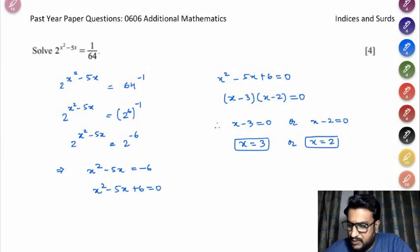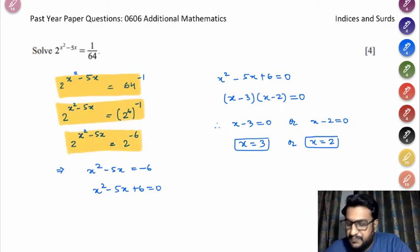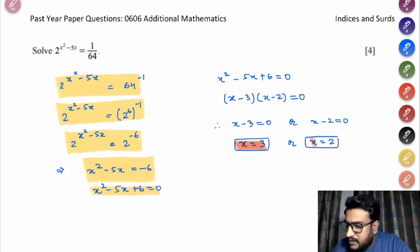The first question is solve 2 to the power x² minus 5x equals to 1 by 64. So first try to write down everything in the form of exponents. Once you write down everything in the form of exponents, the next step is to make the base same. Once the base is same and these two are equal, which implies that your powers must be equal. So once you equate your powers, this will give you a quadratic equation. And if you solve the quadratic equation by middle term splitting, the two possible values of x are 3 and 2.